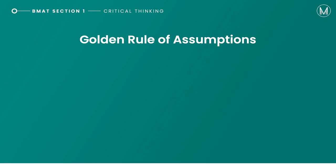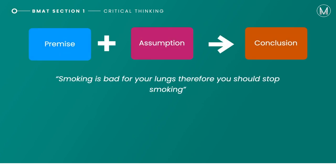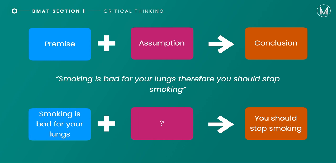Let's look at the golden rule associated with assumptions. We start with a premise, then add the assumption — the unstated link — in order to get to the conclusion. Reframing this with our example: smoking is bad for your lungs, therefore you should stop smoking. The premise is that smoking is bad for your lungs. The conclusion is that you should stop smoking. And the assumption — the link between the two — is that we care about our lungs. Otherwise this wouldn't make sense: if we didn't care about our lungs, we wouldn't stop smoking.